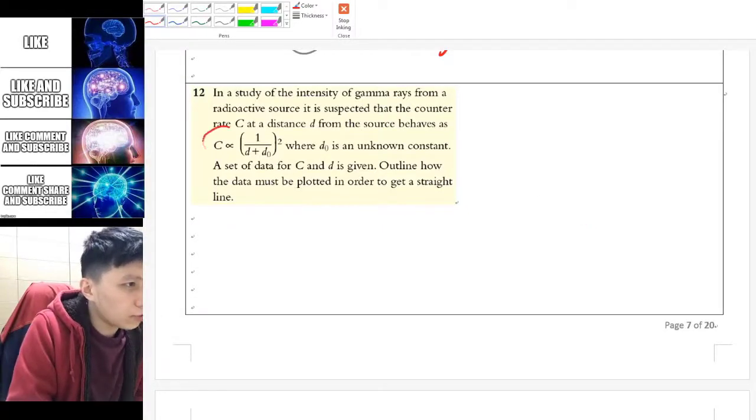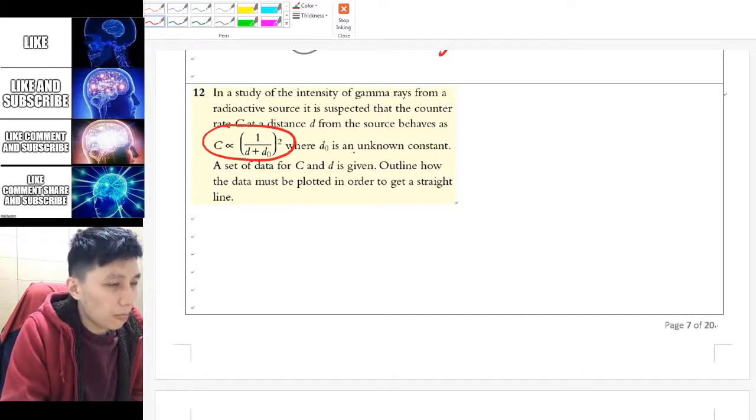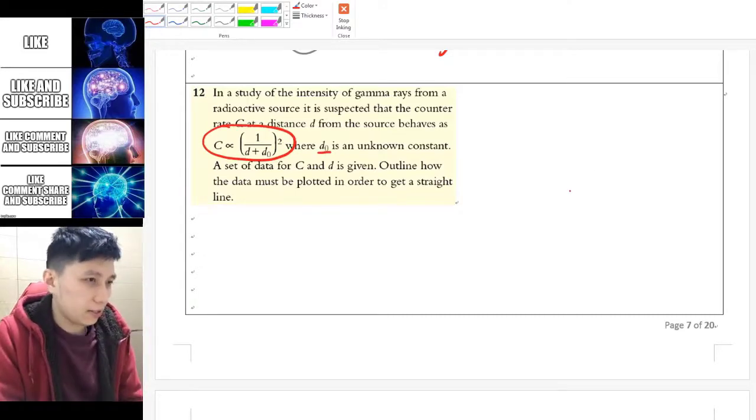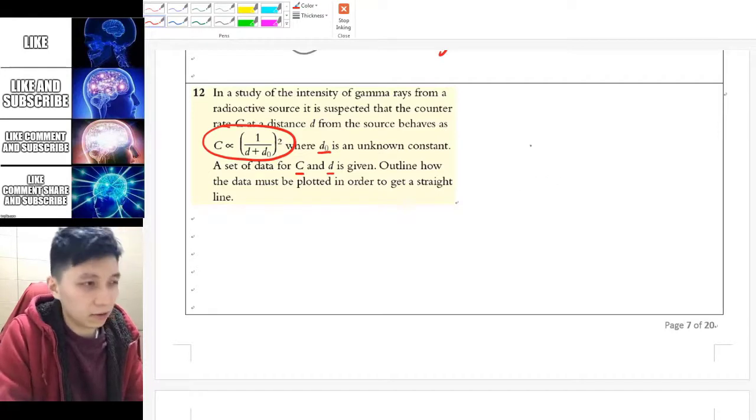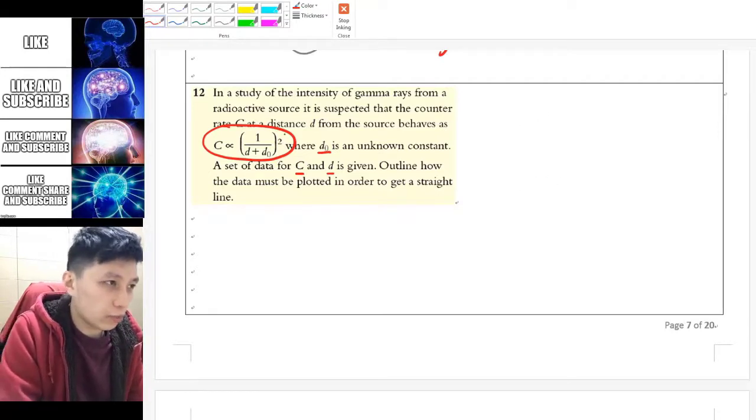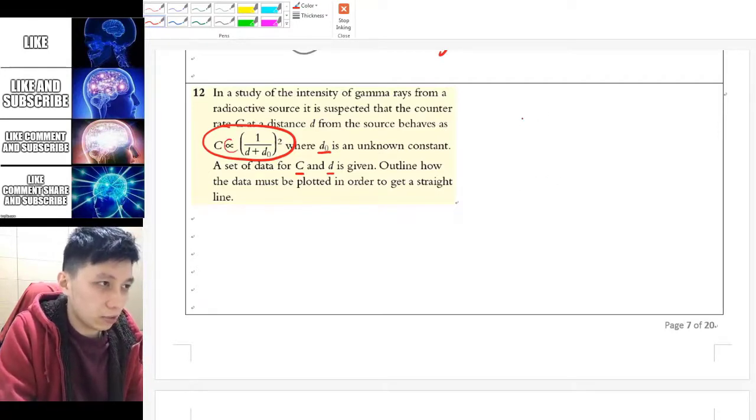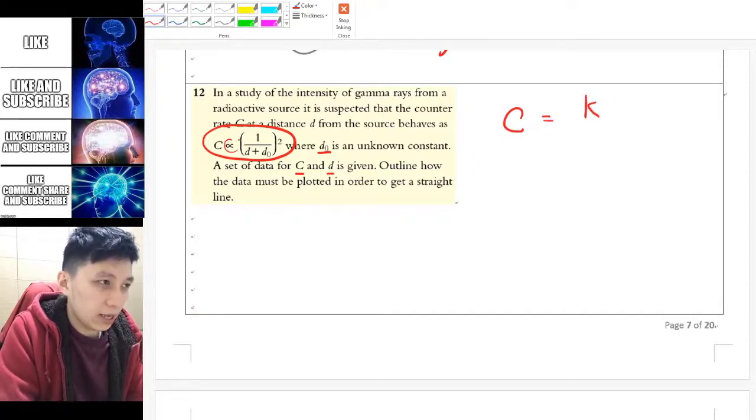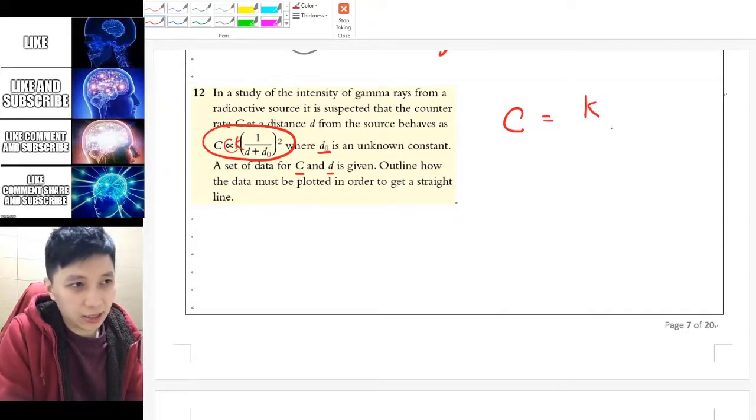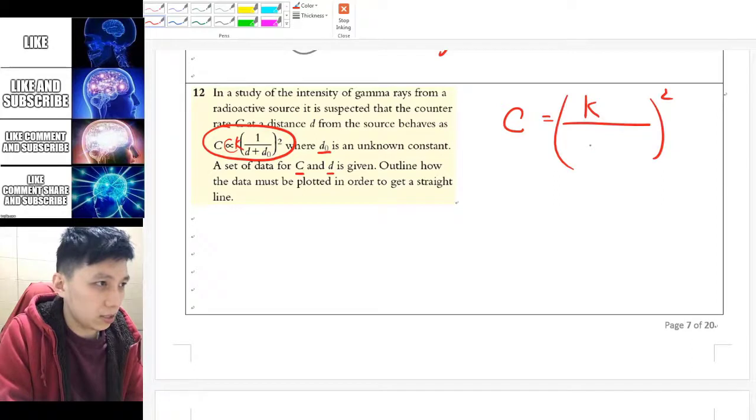Okay, so the question already told you that the relationship is this one while D_log is the unknown. And a set of data, dependent variable and independent variable C and D are given. So outline how to get a straight line. So yeah, okay. So first of all, you have to rewrite, because this is proportional only. So you have to add the constant K to it. You can add it outside or add it inside. It doesn't really matter. So maybe doing inside will be easier.